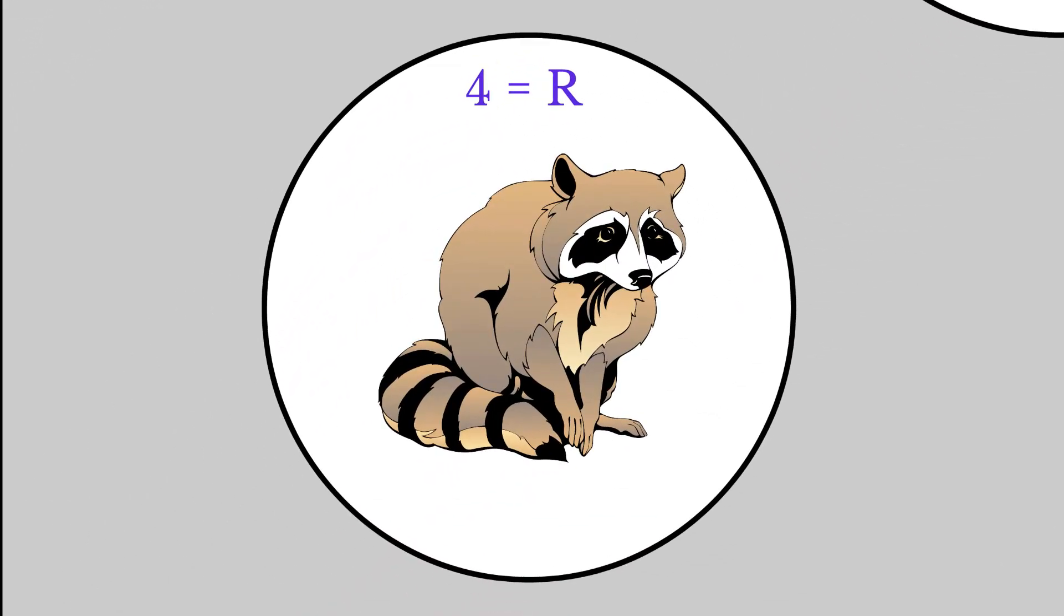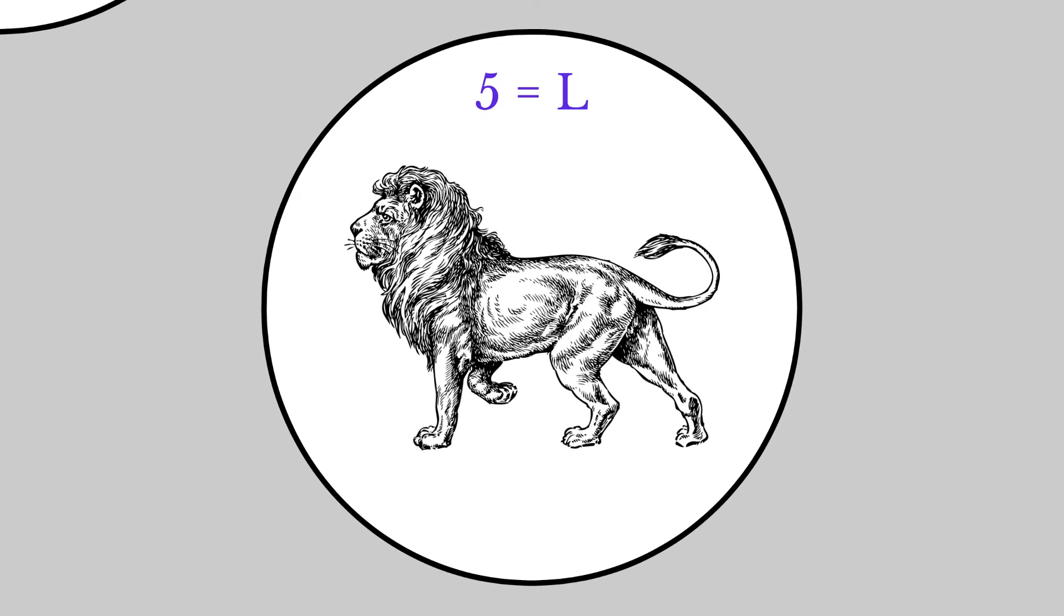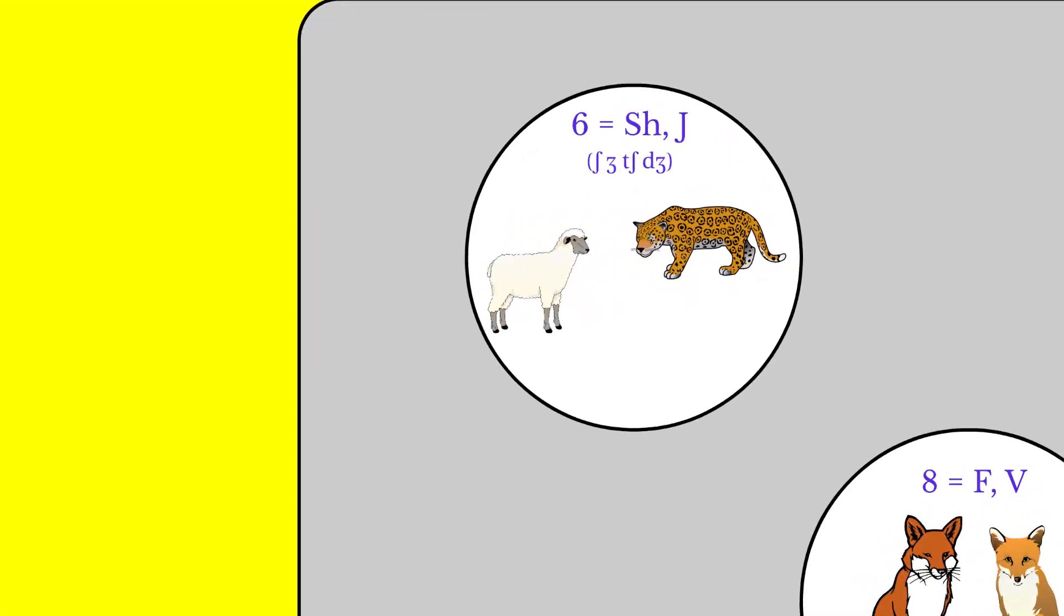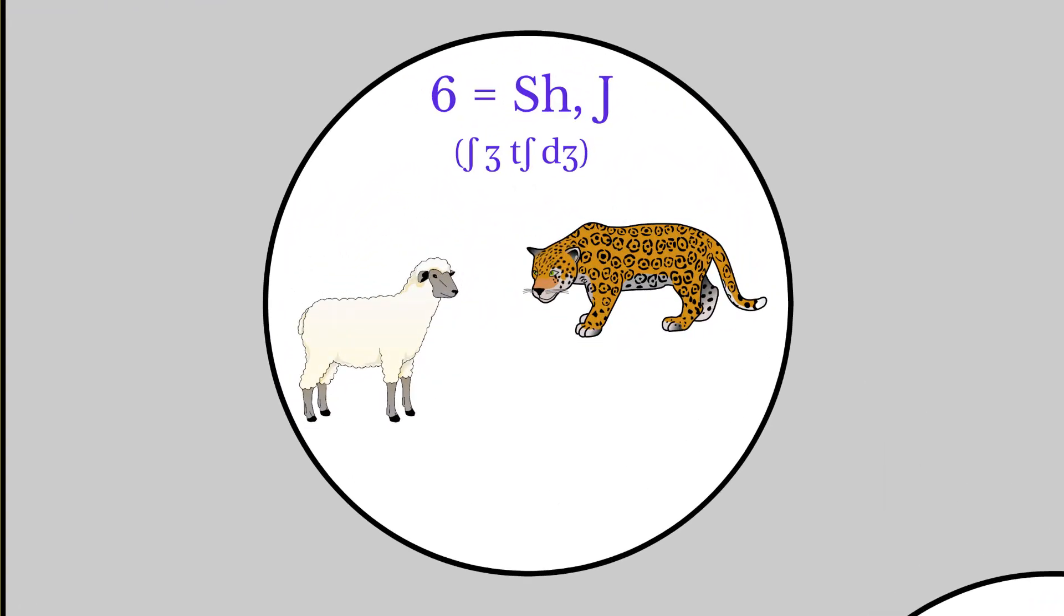Thor had a raccoon as a friend. Think of guardians of the galaxy. They went traveling through space, through the constellation of Leo. They arrived on a planet where they found the king, a jaguar, having a feast serving roasted sheep.